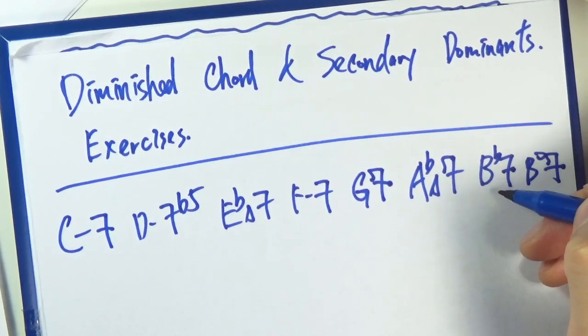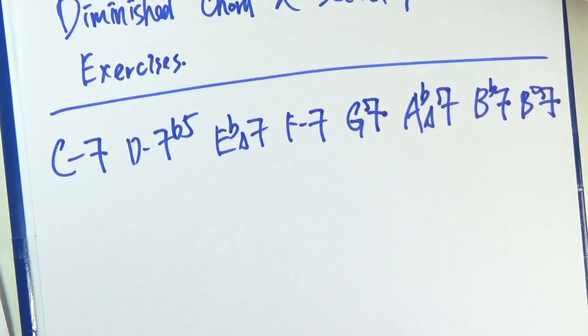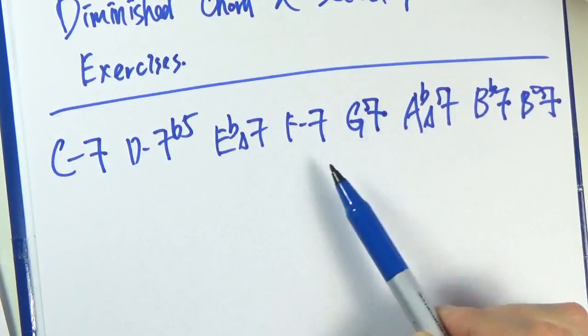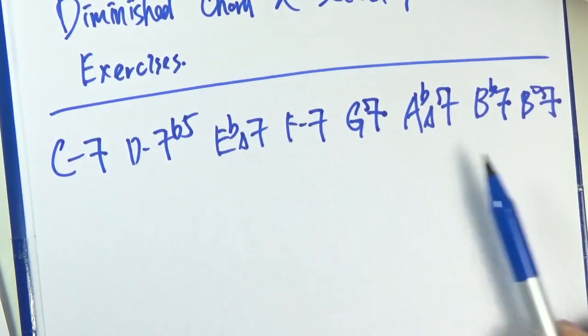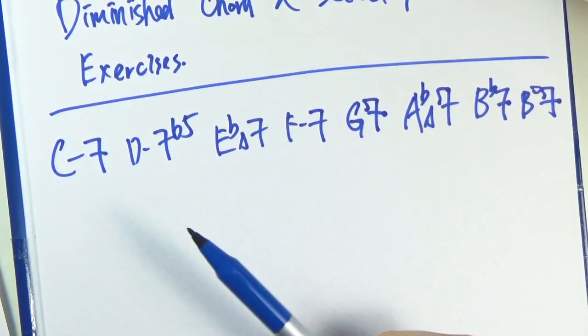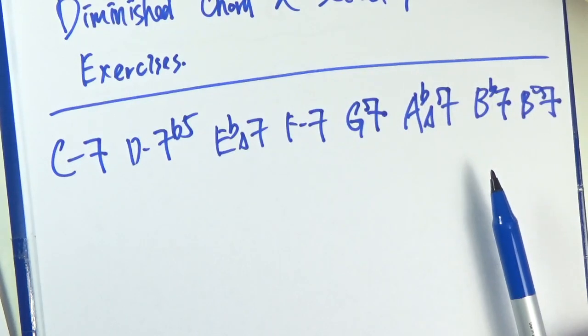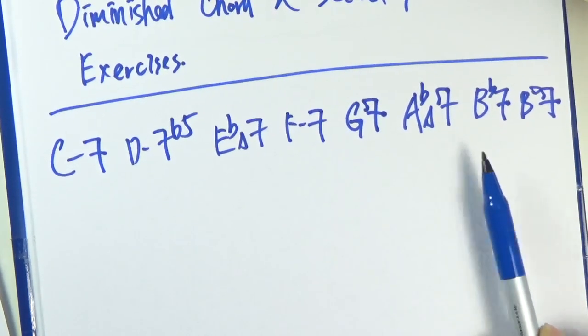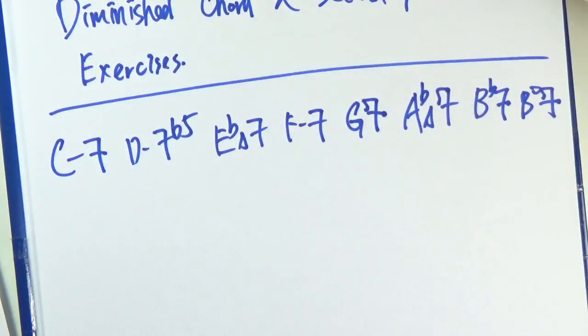So that's Ab major 7, we'll keep that. If you are wondering why, the reason is that it happens in music too. So even though we are technically harmonizing the C harmonic minor scale, I still want to keep the Bb7 here, and that's because you hear that in real music.